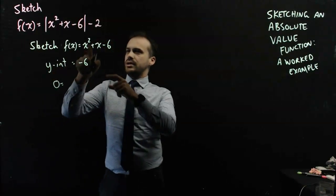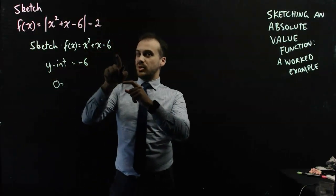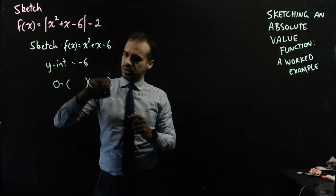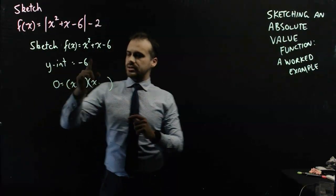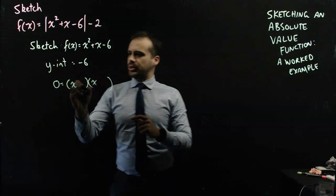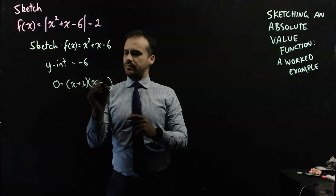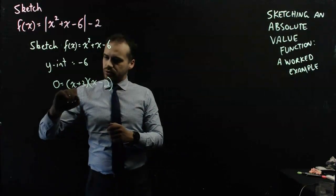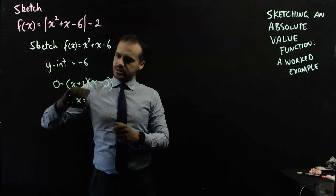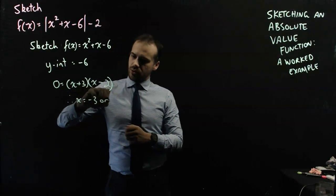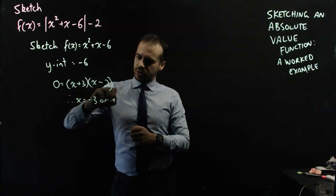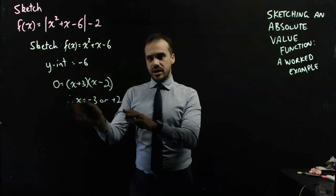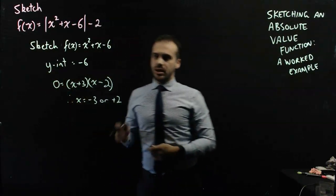0 equals x squared plus x minus 6 can be factorized to be (x+3)(x-2). Therefore, x equals negative 3 or positive 2. So those are going to be my x-intercepts. I've got my y-intercept.